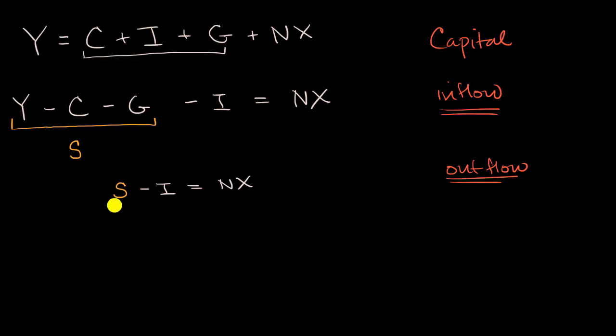And so do you think our savings minus our investment is going to be a capital inflow or capital outflow? Well we've saved a bunch of stuff and we are spending some of it on investment. And so what do we do with the rest of it? Well, it's going to have to go outside of the country. Because if it was being invested inside the country, it would be in this I right over here. And so this is a net capital outflow.